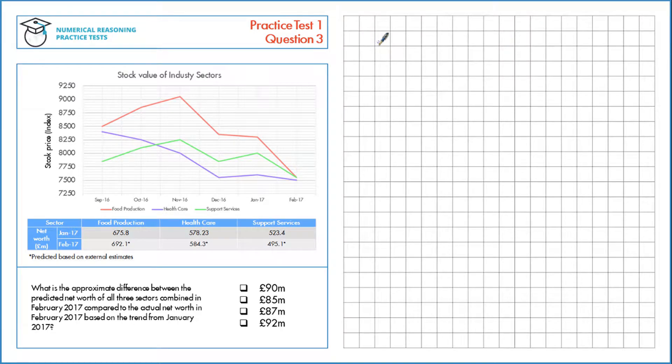What is the approximate difference between the predicted net worth of all three sectors combined in February 2017 compared to the actual net worth in February 2017 based on the trend from January 2017?